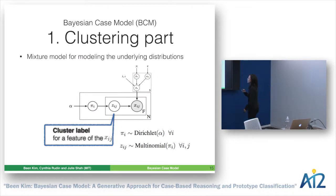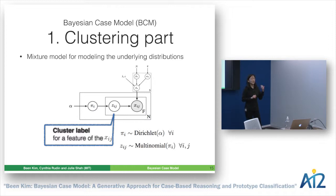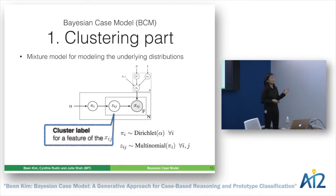BCM leverages a well-studied Bayesian generative model: the mixture model. Instead of assigning one data point to one cluster, a mixture model assigns a label to each feature, allowing more flexibility. This has been well-studied with efficient inference algorithms, such as LDA — Latent Dirichlet Allocation — which is one generative model leveraging mixture models. Mathematically, it leverages the power of conjugate priors: the multinomial and Dirichlet pair.